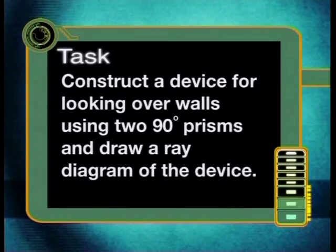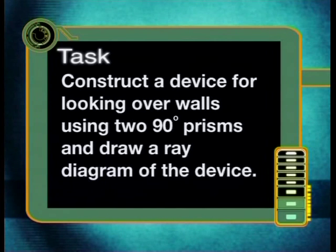A few lessons ago, you were required to make a device for looking around corners using a mirror. Today's problem is very similar. You are going to try to construct a device for looking over walls using two 90-degree prisms instead of mirrors. You will need to draw ray diagrams to show how your device works. If possible, try to make a working model with cardboard and the two prisms. Have fun!